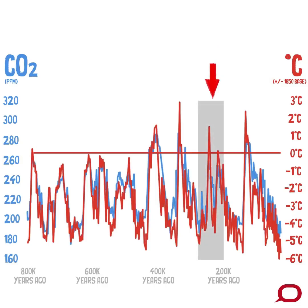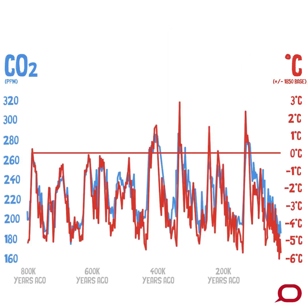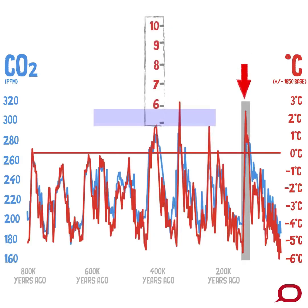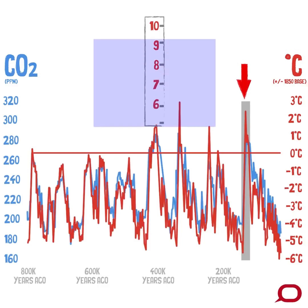Here, at about 200 to 300,000 years ago, is where modern humans had just evolved. And here, at the last interglacial period, the sea level peaked at about 6 to 9 meters higher than it is today.